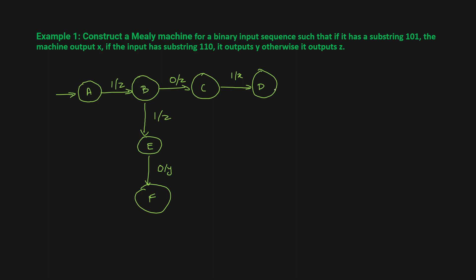Now you can see that states d and f are extra states — you don't need them. We can make it shorter by combining or transferring: from state e we can directly go to state c, and from c we can also come back to b and a.